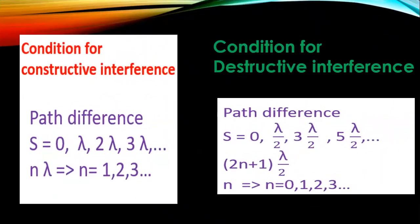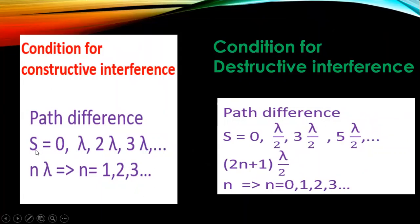There are certain conditions for constructive and destructive interference related to path difference. If the path difference between two waves is 0, λ, 2λ, 3λ — written in short as nλ, where n = 0, 1, 2, 3 and so on — then you will have constructive interference.